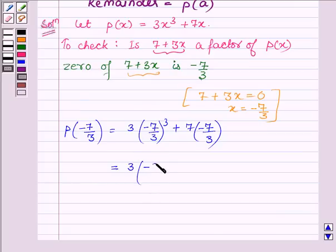3 times minus 7 whole cube is minus 343 and 3 whole cube is 27, plus 7 into minus 7 is minus 49 and the denominator we have 3.